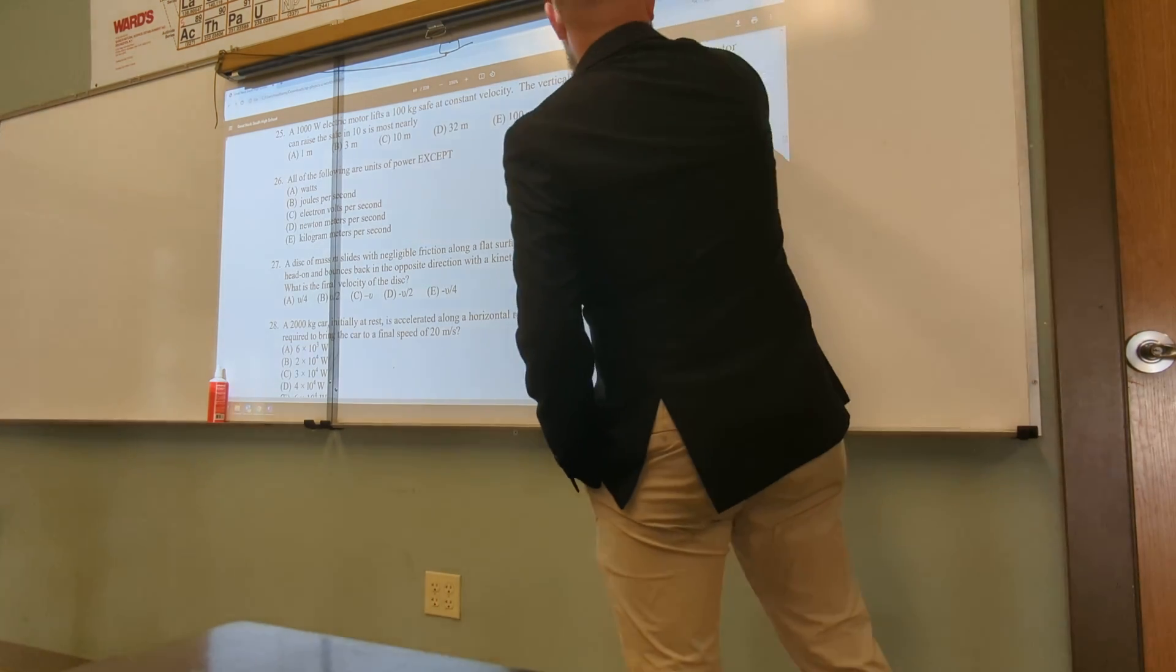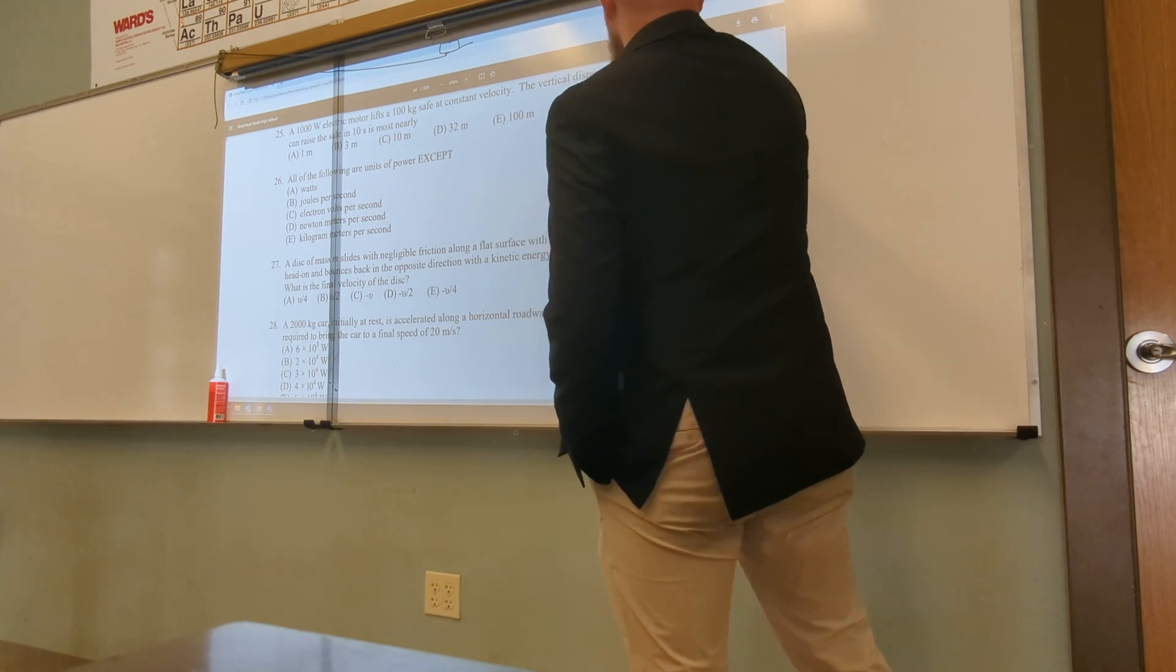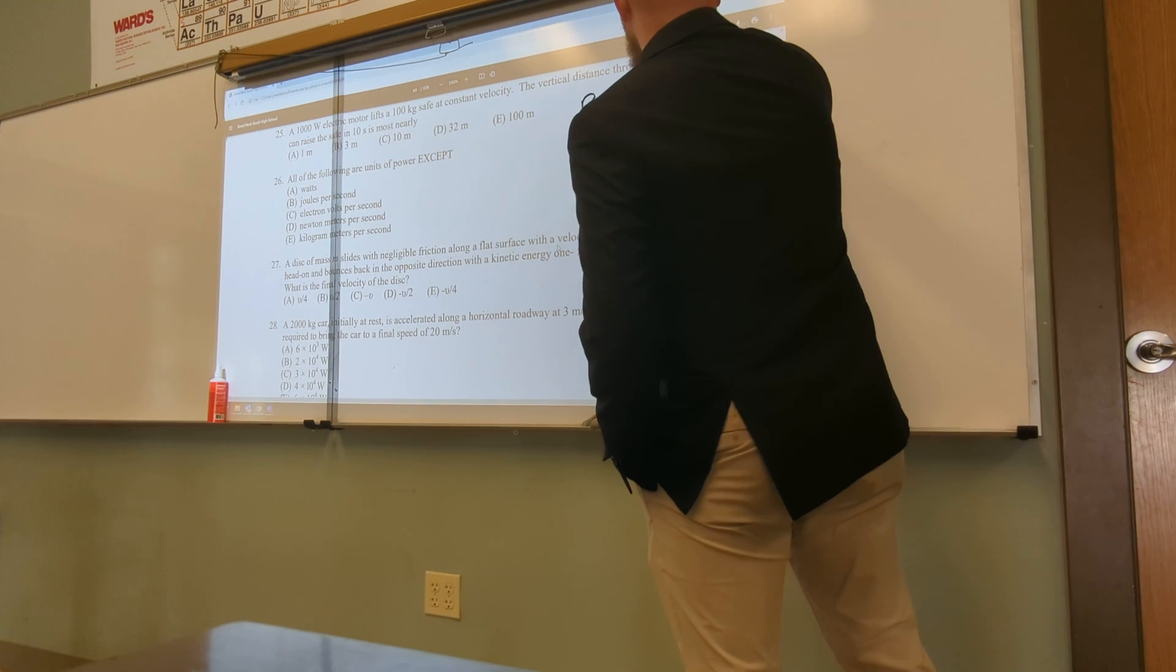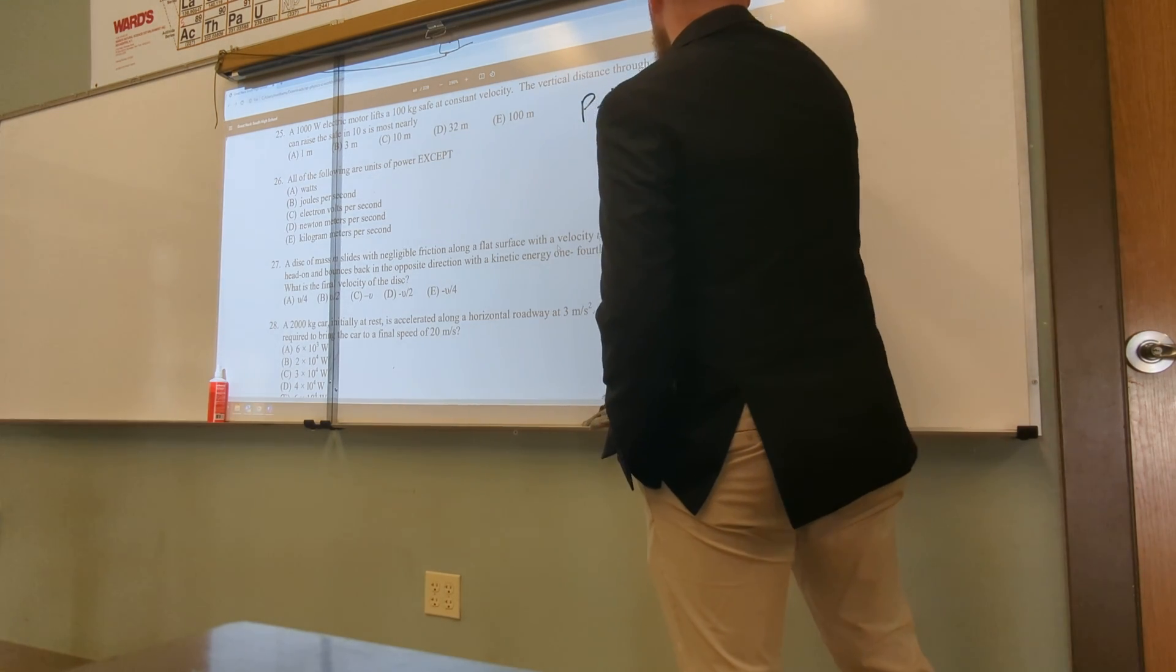So I have P equals PE divided by T. What's my formula for the potential energy of gravity? That's just M, G, H over T.